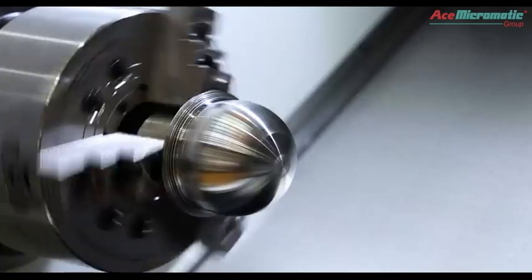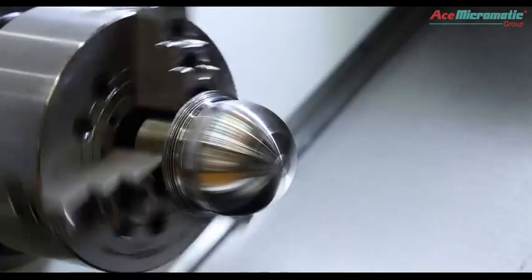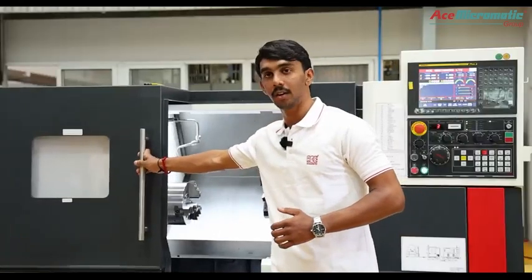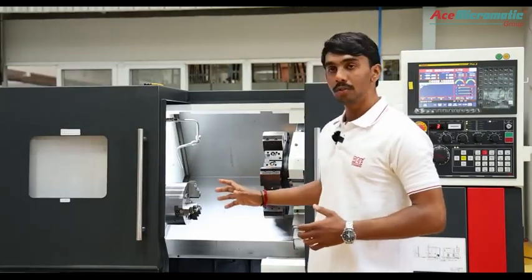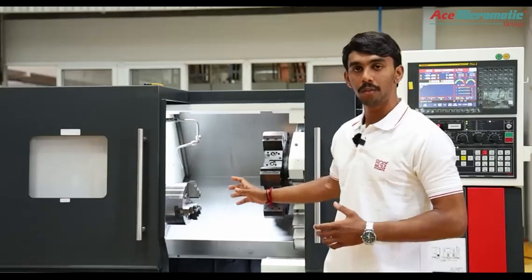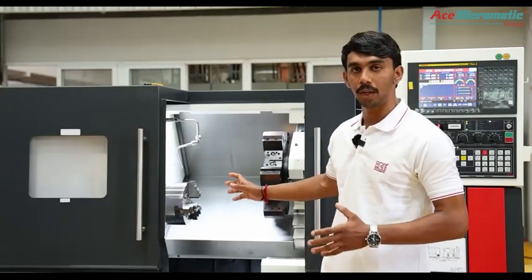The maximum turning diameter of the machine is 270mm, maximum turning length of the machine will be 255mm. Additionally, spindle nose will be A-8 to 6 big bore with a bar capacity of 74mm.